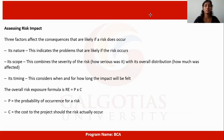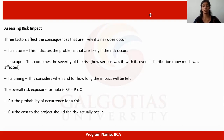Three factors affect the consequences if a risk occurs. Its nature — the problems that are likely if the risk occurs. Its scope — combines the severity of the risk with its overall distribution, i.e., how much is affected. Its timing — considers when and how long the impact will be felt. The overall risk exposure formula is RE = P × C, where P is the probability of the risk occurring and C is the cost should the risk actually occur.